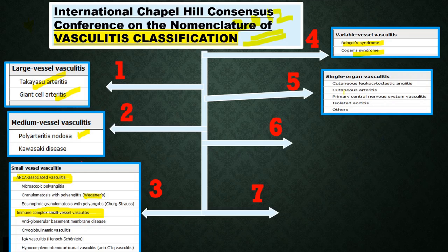Single organ vasculitis, which includes cutaneous vasculitis, cutaneous arteritis, primary CNS vasculitis, isolated aortitis, and others.